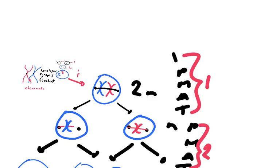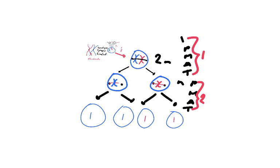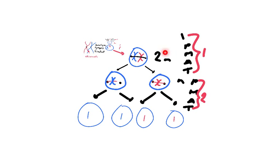In metaphase, they line up in homologous pairs on the equator. In anaphase, the homologous pairs get pulled apart — A is for apart. In telophase, they form two cells. Then it goes through the second division: prophase, metaphase, anaphase, and telophase. In metaphase they line up in the middle; in anaphase the centromeres get pulled apart because the centromeres split; in telophase they form two cells. By this way, you've carried out a reductive division — going from a 2N cell to four N cells.